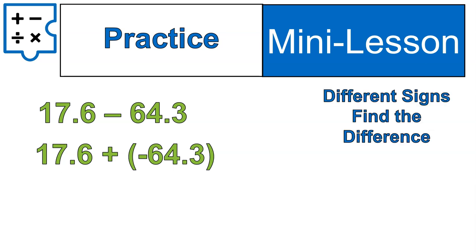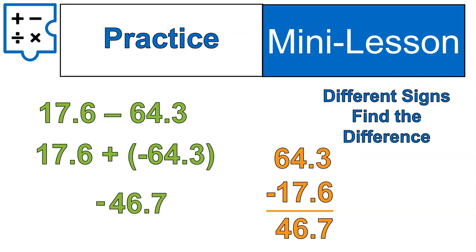When you subtract, you put the larger absolute value first. Or in other words, whichever number is bigger when you ignore the signs. So 64.3 will go first, and then I'm going to subtract 17.6. Line them up. Subtract. And I get 46.7. Then I take the sign from the larger absolute value. So again, I'm asking myself, are there more positives or negatives here? There were 17.6 positives. There were 64 negatives. So my final answer is definitely going to be negative. We have to remember that last step.